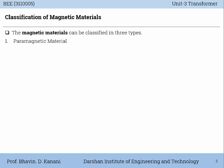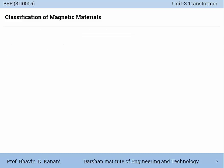First is paramagnetic material. Second is diamagnetic material. Third is ferromagnetic material. Now let us understand all these three in detail.